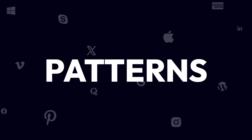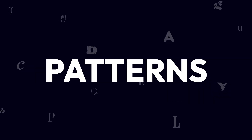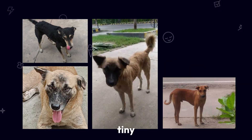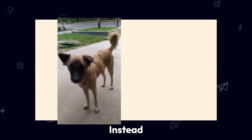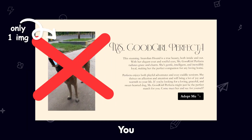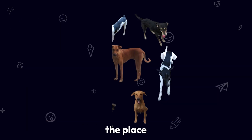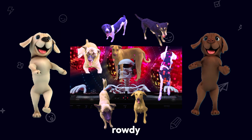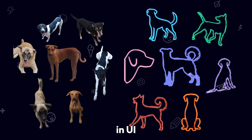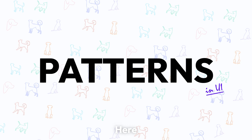Number three: Patterns. Imagine a collection of tiny dog images. Instead of just having one picture each, you repeat them all over the place — like a rowdy dog body. That's the background pattern in UI design. There are some ways to use patterns in UI design.